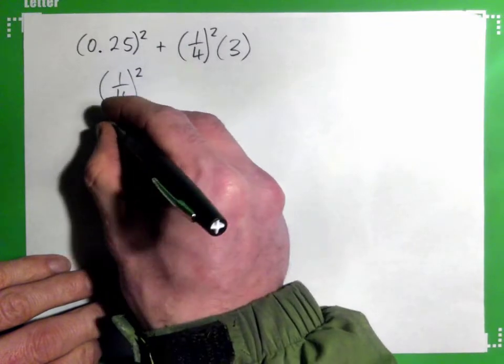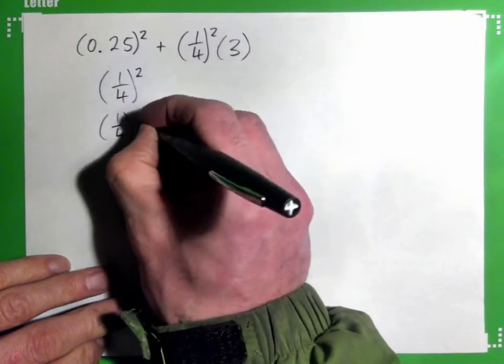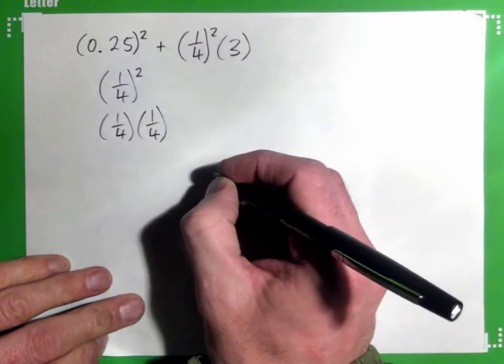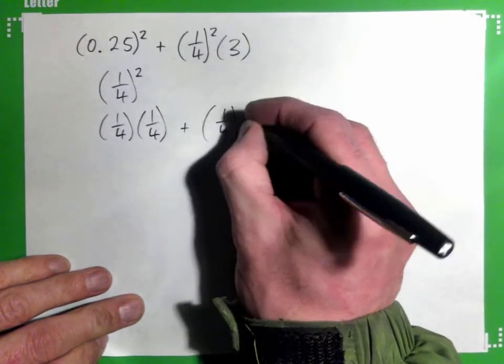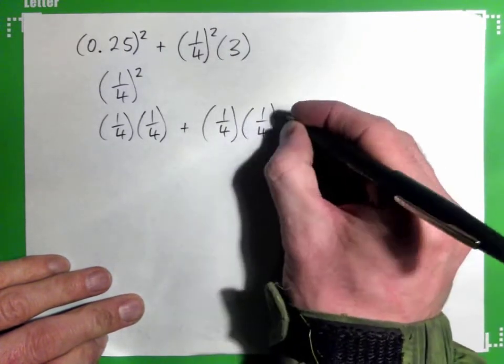A quarter squared, which is a quarter times a quarter, right? And here, this quarter squared, that's also a quarter times a quarter, right? And then we have times 3.